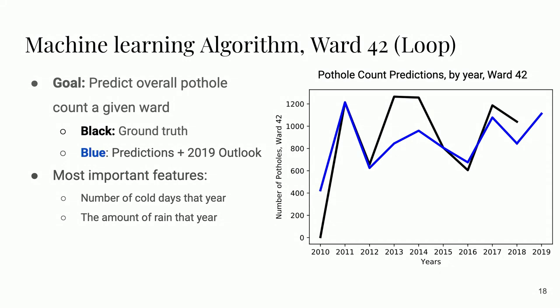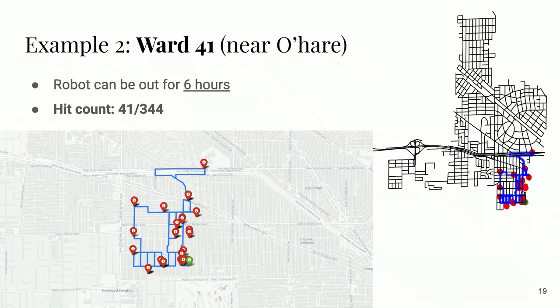We also made a machine learning algorithm to predict how many potholes there will be in a ward in a given year. We used features like the amount of rain, amount of snow, and the number of cold days that year. It does a pretty good job, but there's a lack of granular weather data and granular traffic data in Chicago. The most important features identified by the regressor were the number of cold days that year and the amount of rain. Looking at the routing algorithm we developed — over six hours in Ward 41, we can route 41 potholes.